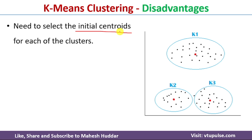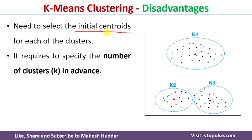The second disadvantage of k-means clustering is that we need to specify the number of clusters to be formed for the given dataset in advance. Given a dataset, we need to specify the value of k, which is very difficult because we cannot say what the optimal value of k should be — whether k equals 1, 2, or 3. This is the second disadvantage of k-means clustering.